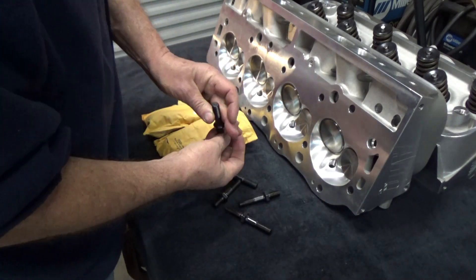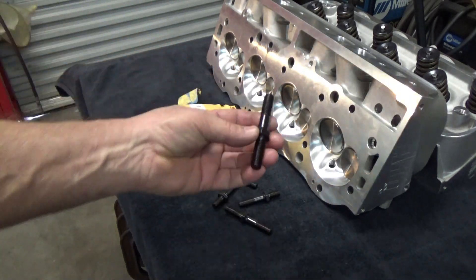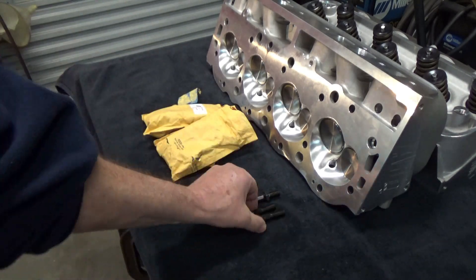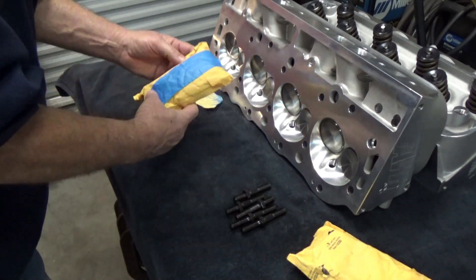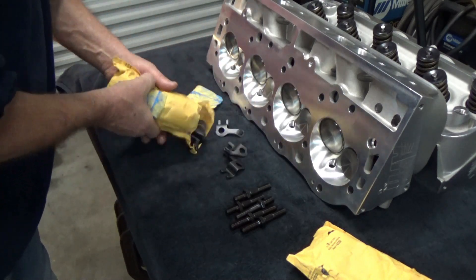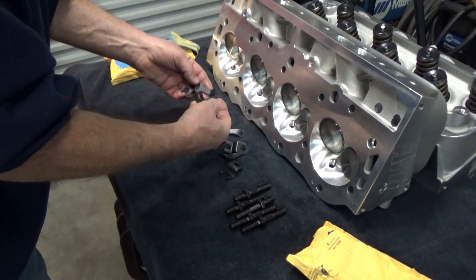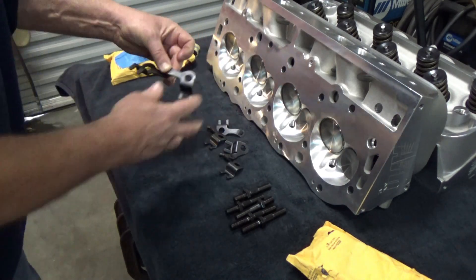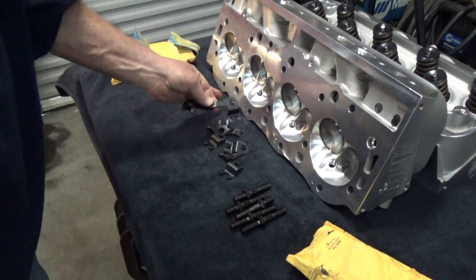Got the heads out of the box. Those are the rocker studs there and they're actually ARP and they came with the heads. Also in this other bag over there are the push rod guide plates. They come in like two sections and I've not used push rod guide plates like this yet. We'll kind of go over later in the video why I think they offer them like that.